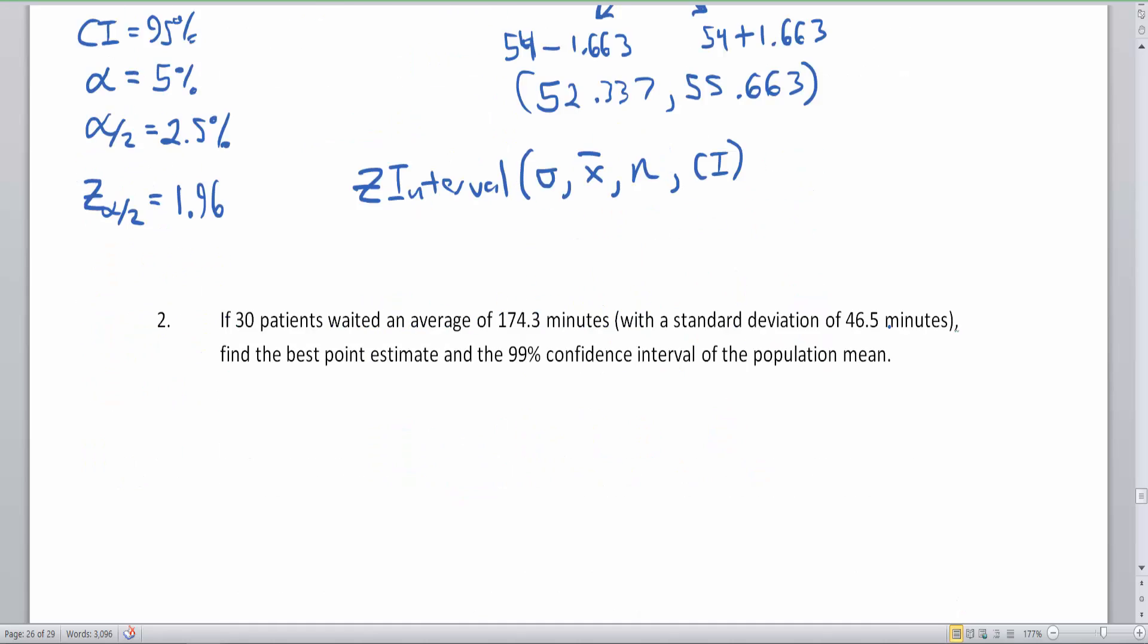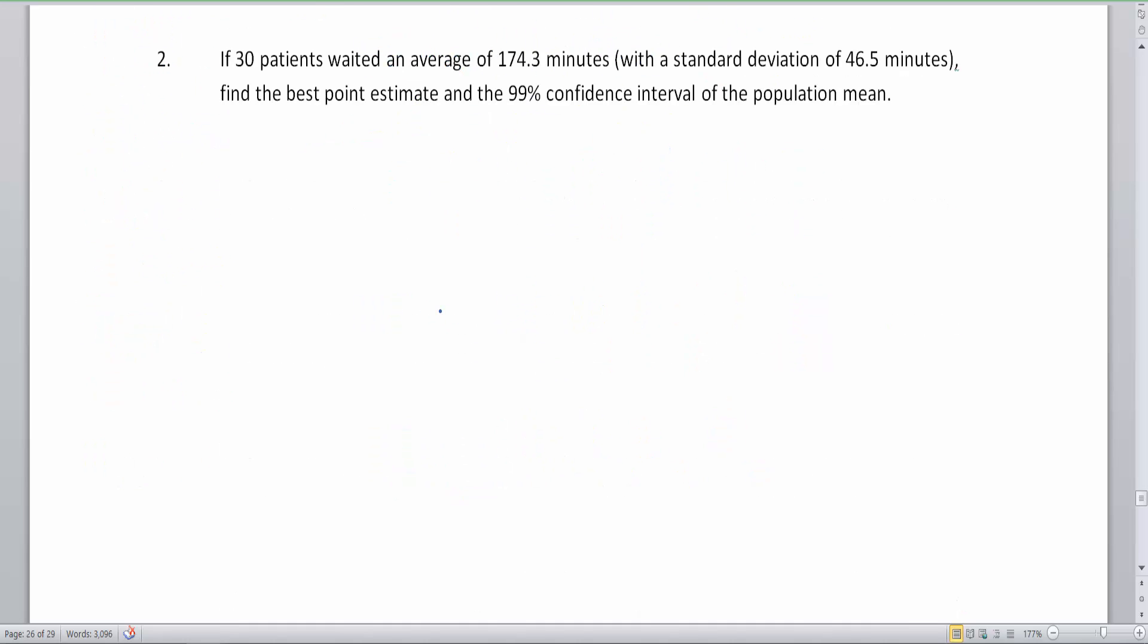Okay. So for our last example of this video for part two of our three part video series on confidence intervals, we're going to talk about patients waiting in a extremely busy hospital. So we have 30 patients. We have an average of 174.3 minutes. So this is our X bar because this is taken from the 30 patients. And a standard deviation of 46.5. Now we have a 99% confidence interval, which means we can find our alpha. We can find our alpha divided by two and we can find our Z alpha divided by two.